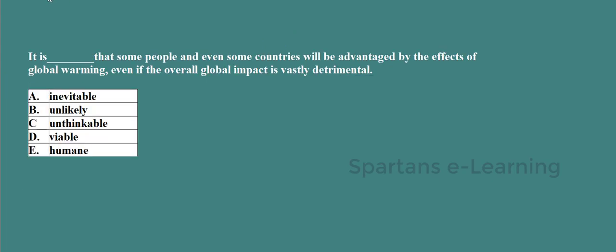Looking at options: 'unlikely' is a negative term — cancel it. 'Unthinkable' is also negative — cancel it. 'Humane' means kind — out of context. We are left with 'inevitable' and 'viable'. Viable means capable of producing results. Inevitable means something that is definitely going to happen — which fits 'likely to happen.' So inevitable is the correct answer; viable is out of context here.